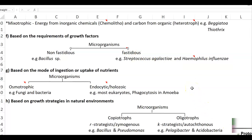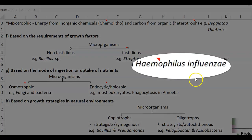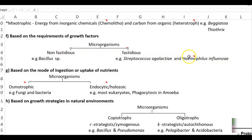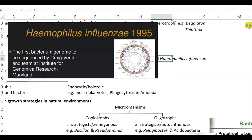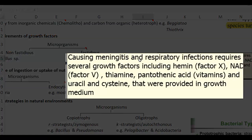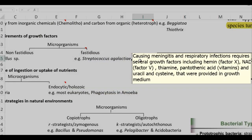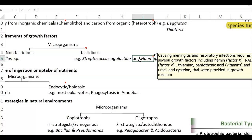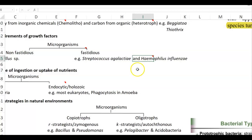An example of a fastidious organism is Streptococcus agalactiae, and another is Haemophilus influenzae, which causes respiratory tract infections and meningitis. It requires many growth factors including hemin (Factor X), NAD (Factor V), thiamine, pantothenic acid, and certain nucleotides such as uracil and cysteine for growth.